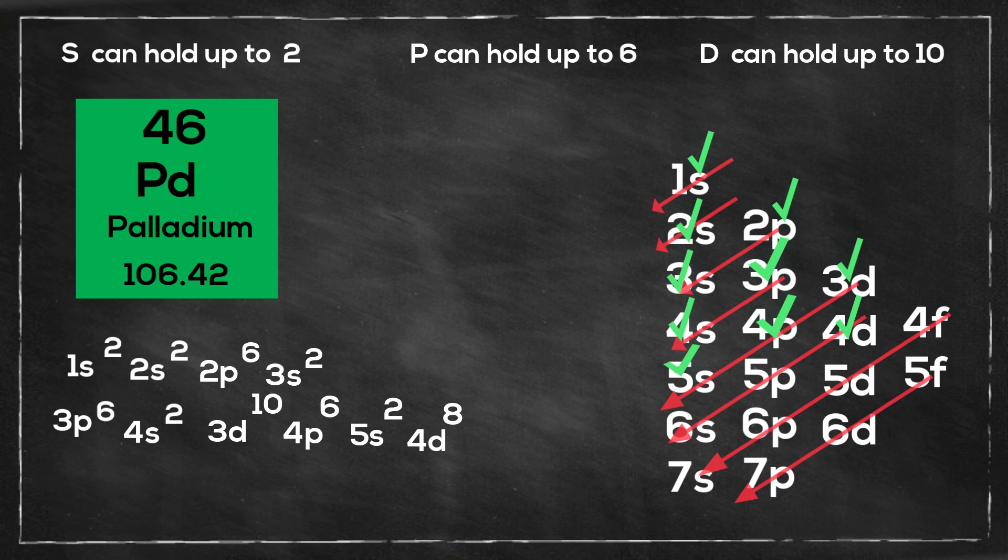But palladium likes to be more stable. So you throw out the s orbital, the 5s orbitals, so that leaves you with a 4d10. So there we go, and you can write it like this using the noble gas. So again, palladium throws out the 5s2 and jumps to a 4d10.